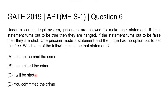If the statement 'I will be shot' is false, then according to the law, since the prisoner has made a false statement, they should be shot. However, if the prisoner is shot, then the statement becomes true. And therefore, the verdict of shooting the prisoner becomes unlawful. This creates a paradox and puts the judge in a position of no decision. Therefore, the judge has no option but to leave the prisoner free.